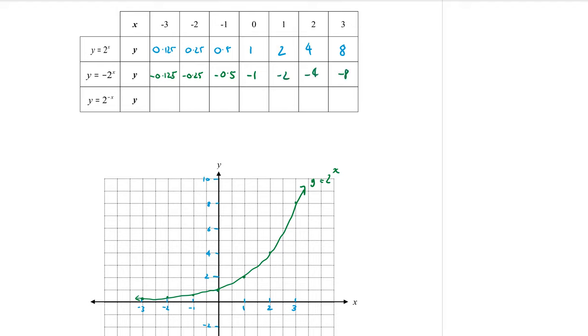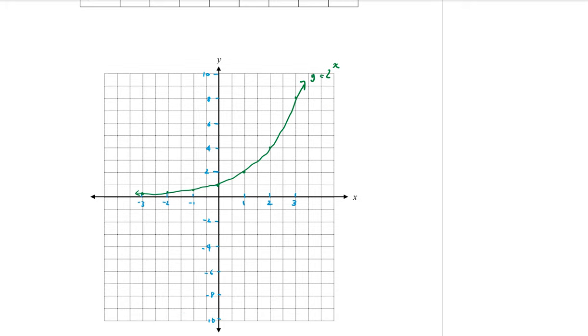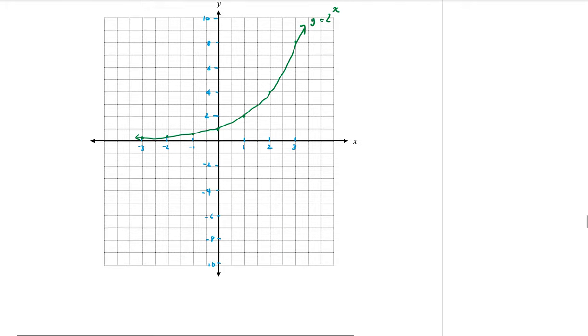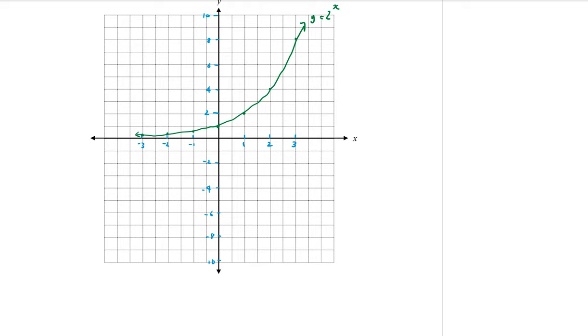So what that means is that my exponential has been flipped over the x-axis, or in other words, is reflected over the x-axis, and is now down here. So it's going through minus 1, minus 2, minus 4, and minus 8. So it has the same shape, but reflected downwards. That is when we have a minus sign in front of the base number.